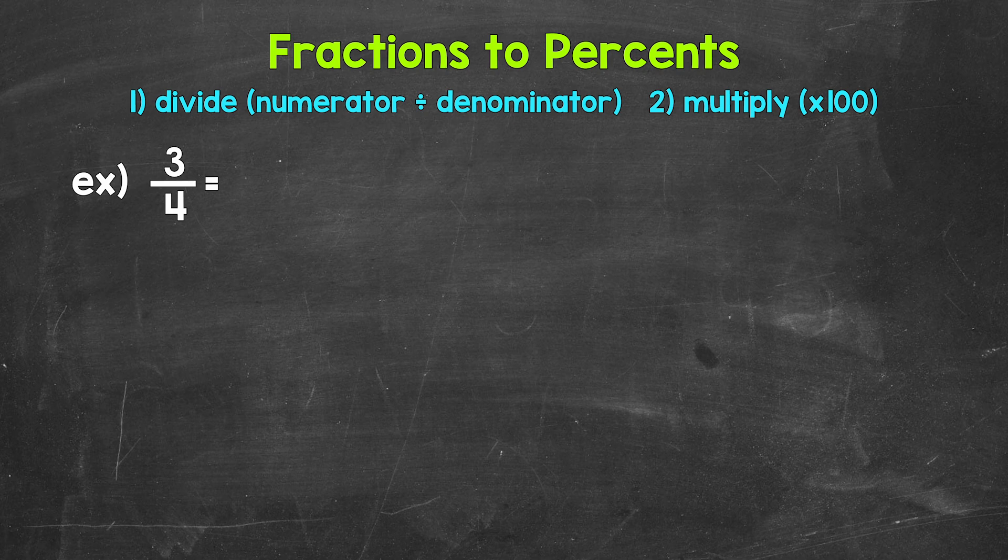Once we have that decimal, we convert it to a percent by multiplying it by 100. And a quick way to multiply by 100 is to move the decimal twice to the right.